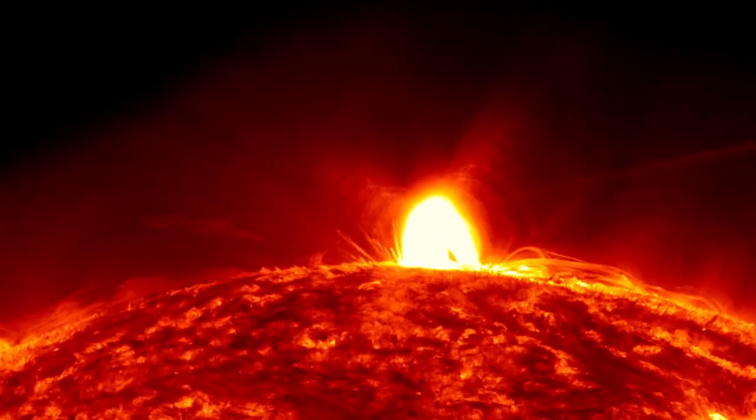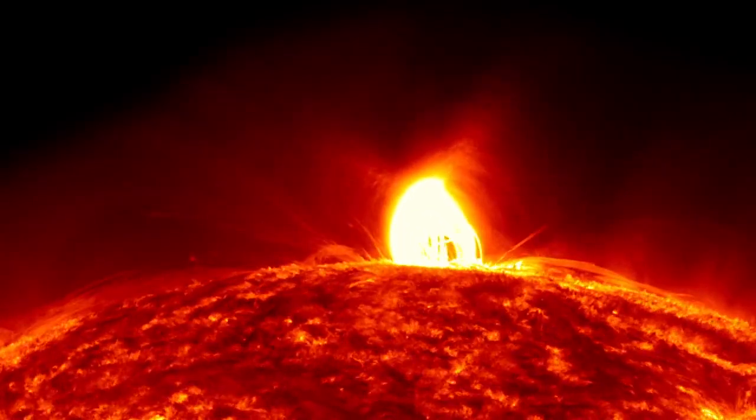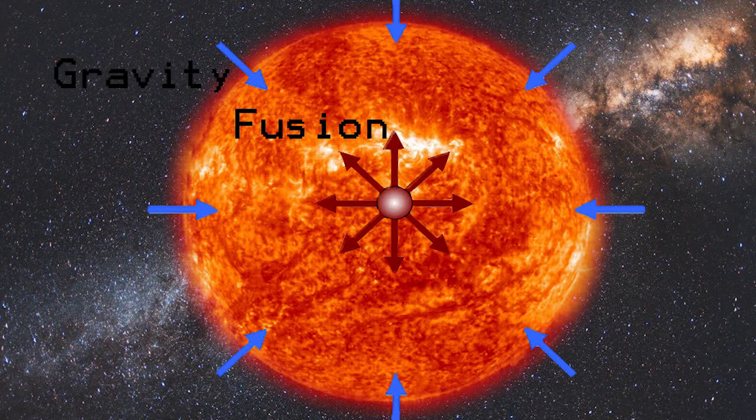Nuclear fusion keeps the star going and keeps the star stable because gravity tries to collapse the star in on itself, but the outward pressure from this nuclear fusion keeps the star stable.